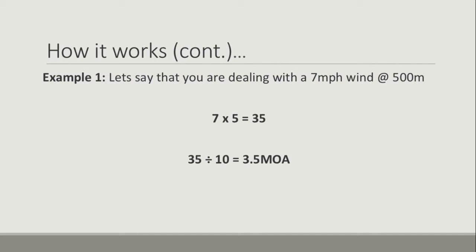The easiest way is to go through some examples. In this example, you're dealing with a 7 mile an hour wind at 500 meters. So 7 — our wind speed — multiplied by 5, which is the constant for 500 meters, equals 35. Now 35 divided by 10, which is our wind constant relating to how far the projectile has moved at 100 meters in a 10 mile an hour wind — that always stays the same — gives us 3.5 minutes of angle. And that is your adjustment.